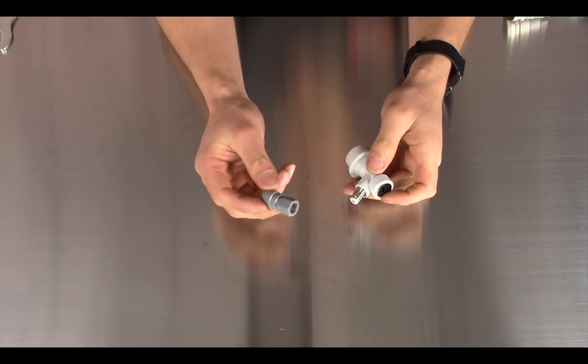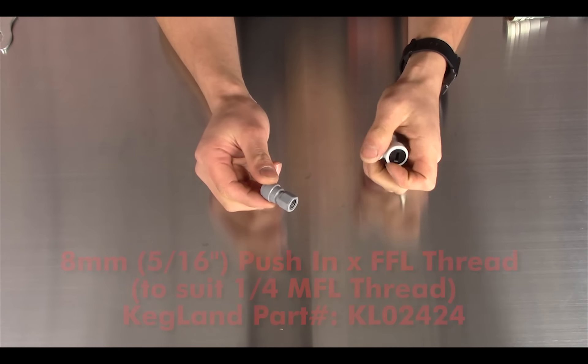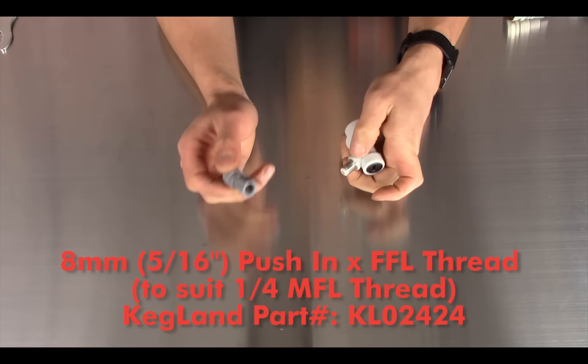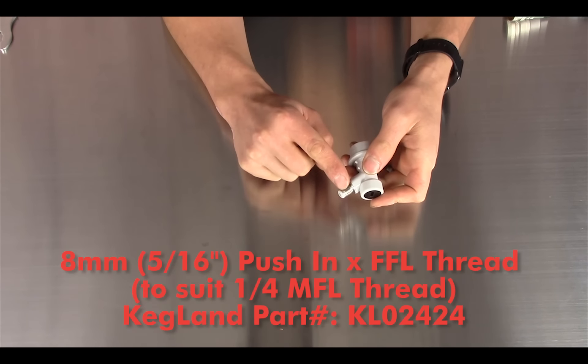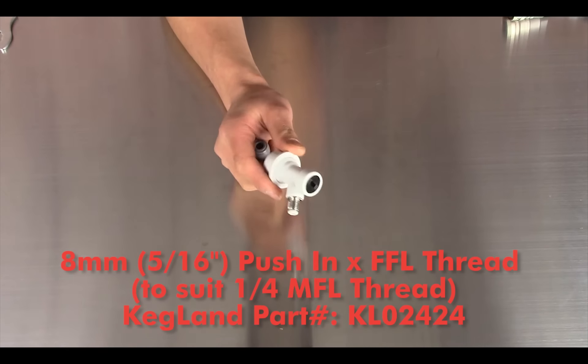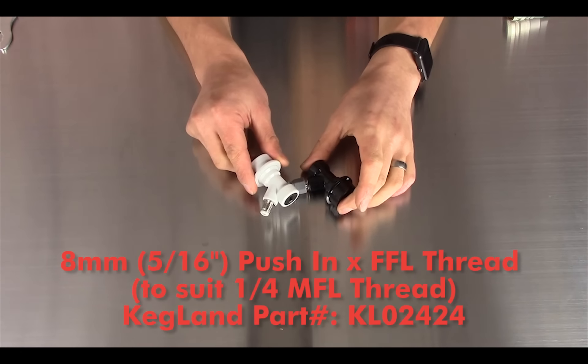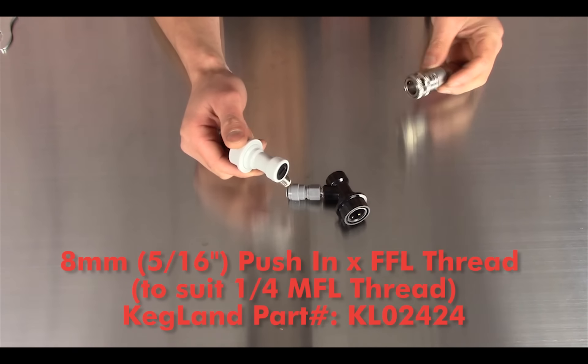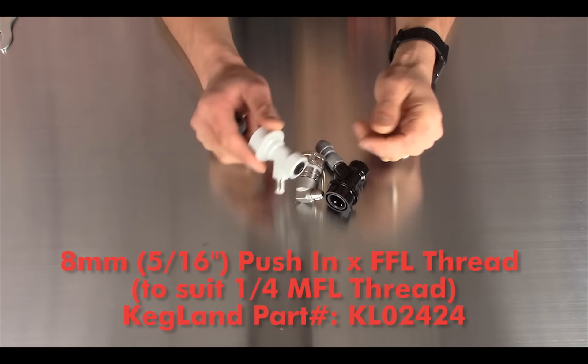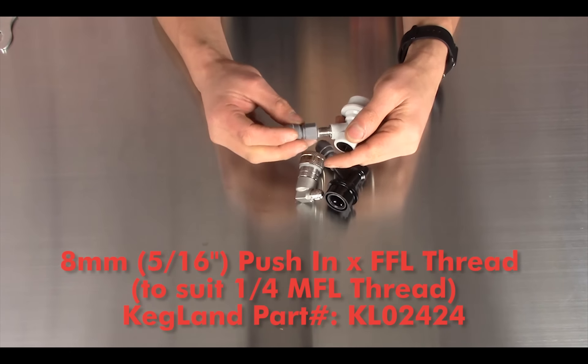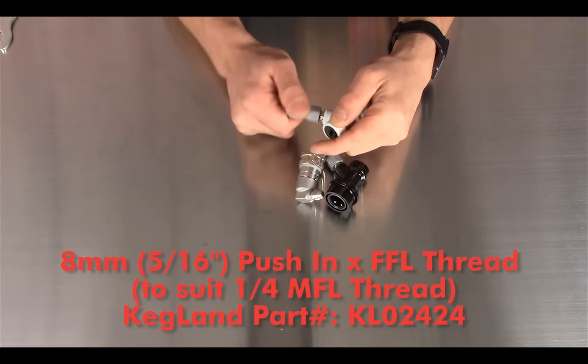Now the other fitting which is really common in the home brewing industry is this FFL fitting. So it's a female flare and that obviously screws onto the MFL fitting, the male flare. So this is the same thread which we put onto our ball lock disconnects, both the plastic ones in liquid and gas and the stainless steel ones that you can see here. So literally all you do is just screw that on like so.